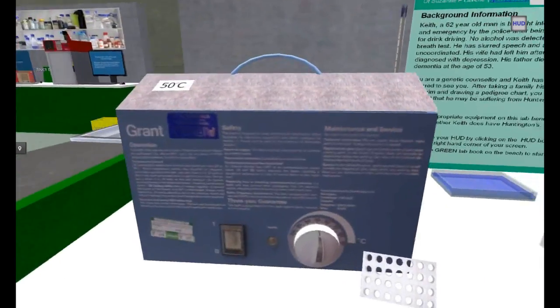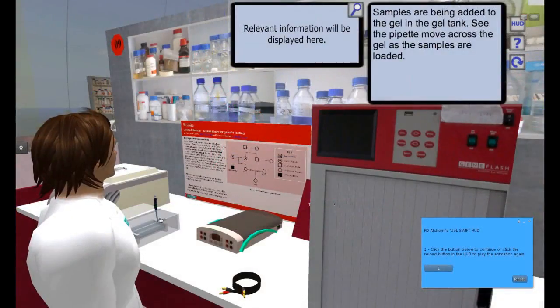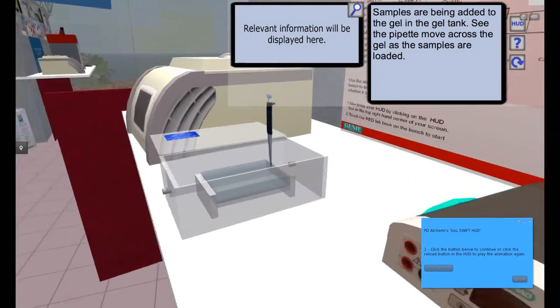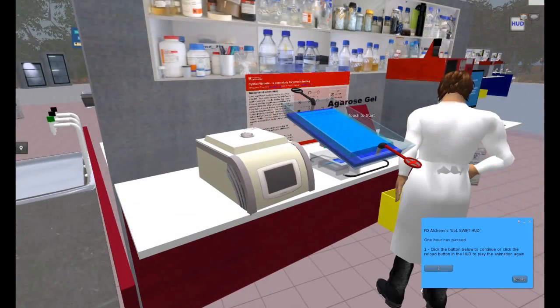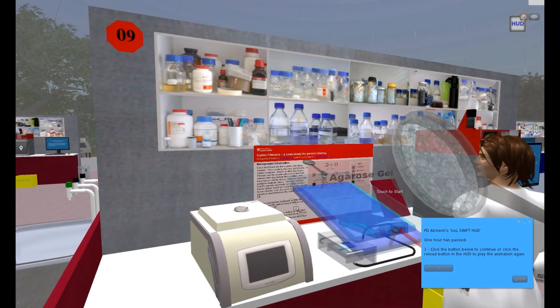The water bath, where reactions take place to cut the DNA. The gel, that separates DNA fragments by size. Again, an animation is shown to demonstrate the actual process.